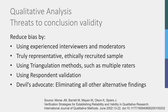Another way to reduce bias is to involve the respondent using respondent validation. The initial results are presented to the respondent to see if they recognise the results. Finally, the devil's advocate approach can be used, in which you establish validity by seeking alternative explanations for your findings and see if you are able to exclude those.